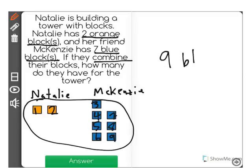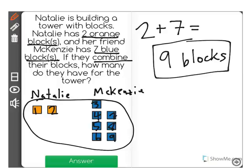There are nine blocks for the tower. What we just did was an addition problem. We took Natalie's two orange blocks, we added Mackenzie's seven blue blocks, and we got a total of nine blocks.